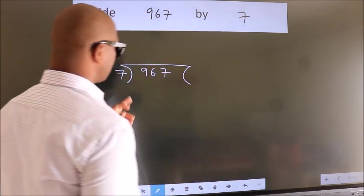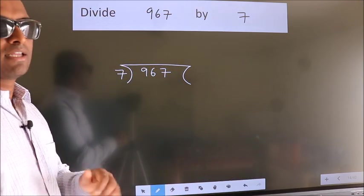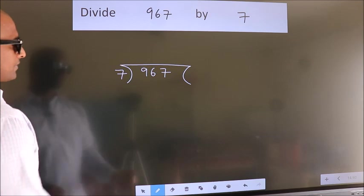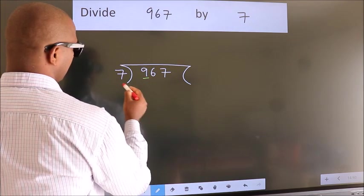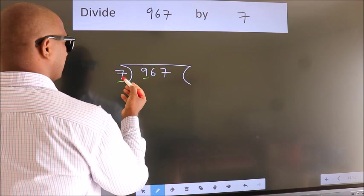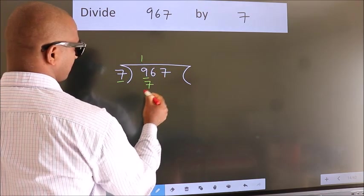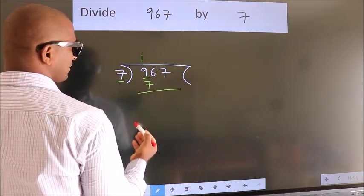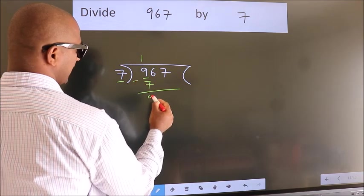This is step 1. Next, here we have 9, here 7. A number close to 9 in the 7 table is 7 once, which is 7. Now we subtract. We get 2.